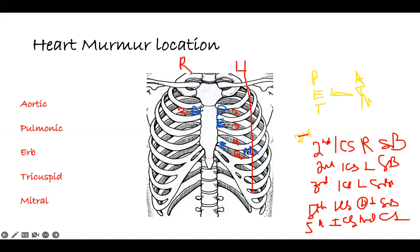The fifth intercostal space is where you can find the apex of the heart. So if they ask where you listen at the apex of the heart, it's the same as the mitral valve sound location — fifth intercostal space at the mid-clavicular line on the left side. That's the same as the apex and the maximum point of the heart.